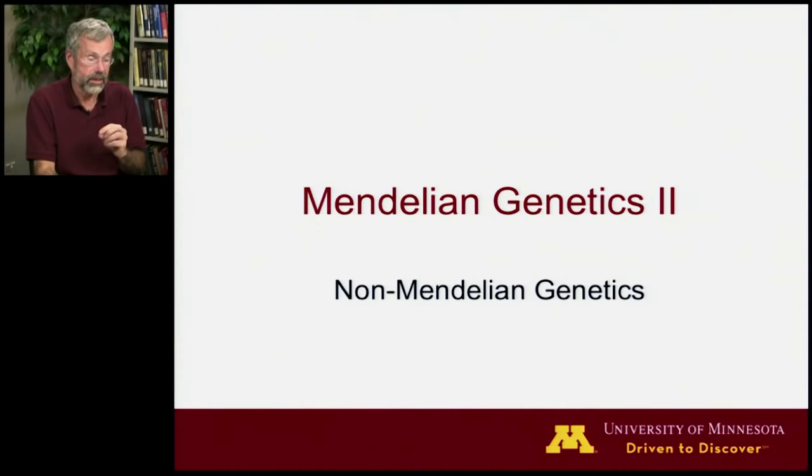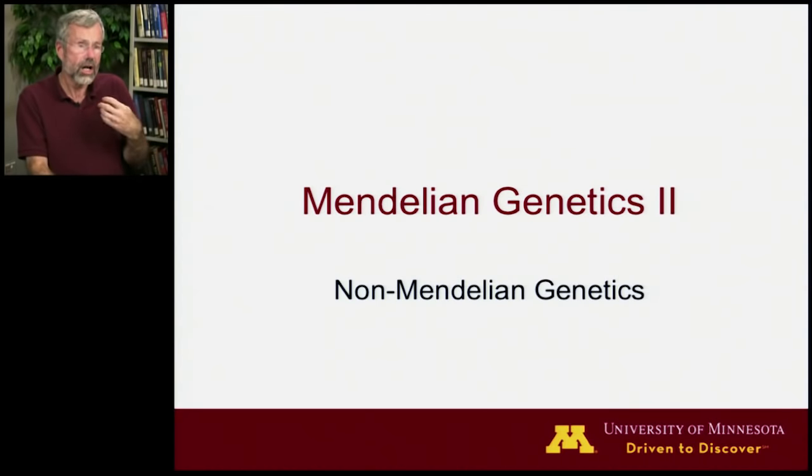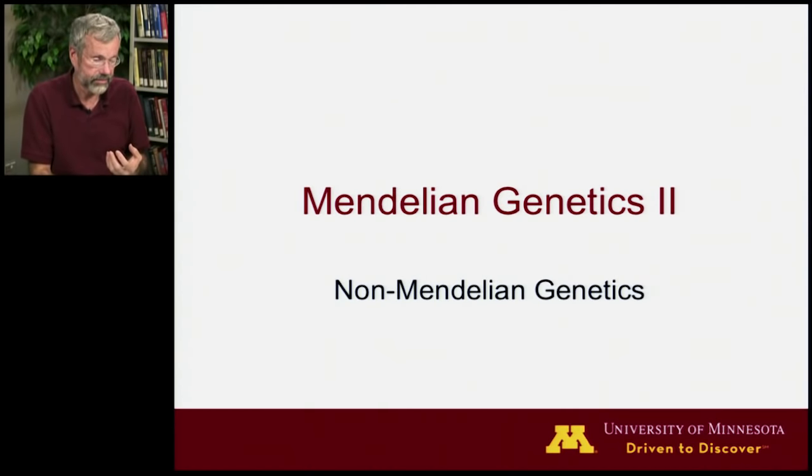Mendelian Genetics is always the first thing to learn in a course like this because that's the simplest possible form of inheritance. We've already seen a slight modification to that when we looked at sex linkage — genes that are just on the X chromosome. But now we're going to turn to what are now called non-Mendelian genetic traits.